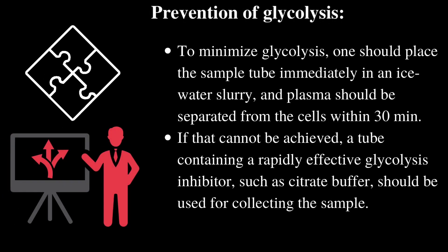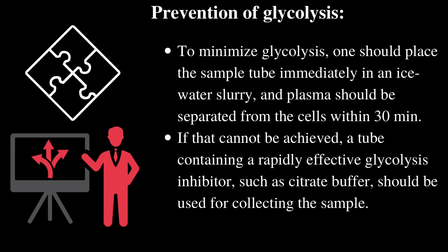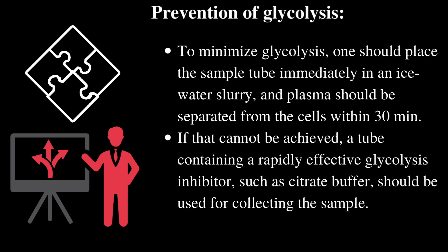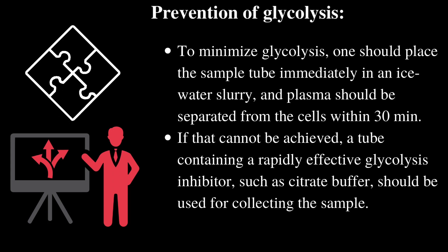Prevention of glycolysis: to minimize glycolysis, one should place the sample tube immediately in an ice water slurry, and plasma should be separated from the cells within 30 minutes. If that cannot be achieved, a tube containing a rapidly effective glycolysis inhibitor, such as citrate buffer, should be used for collecting the sample.